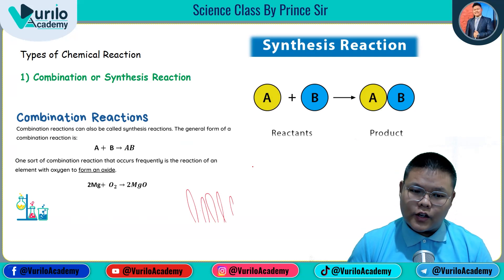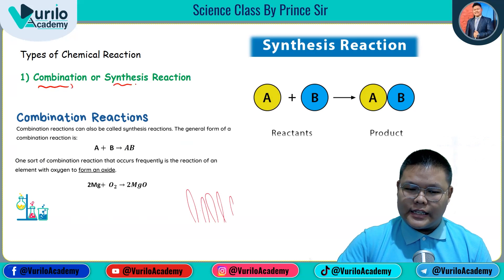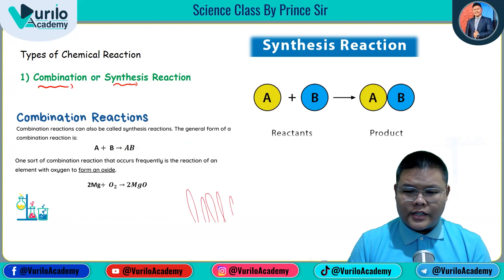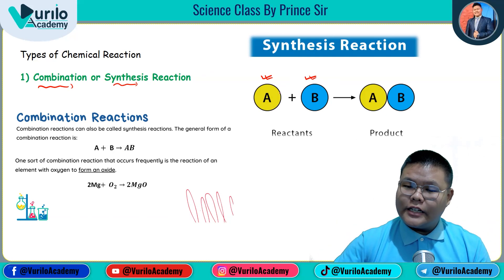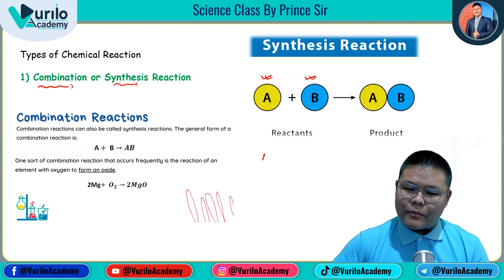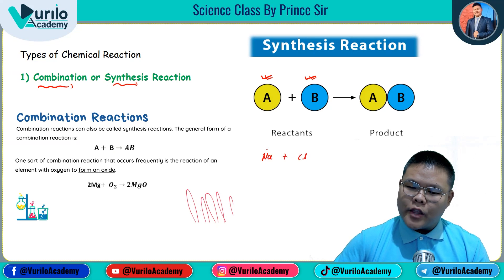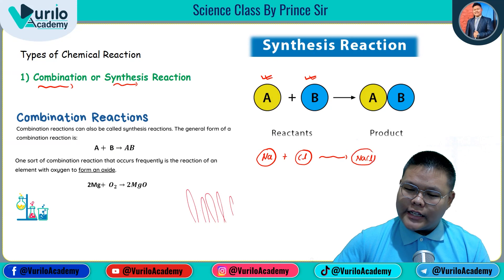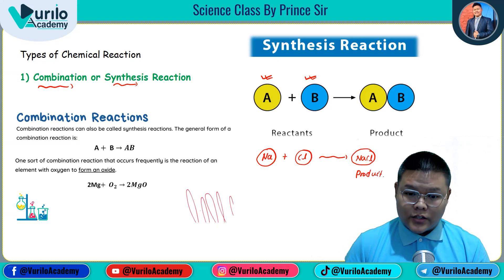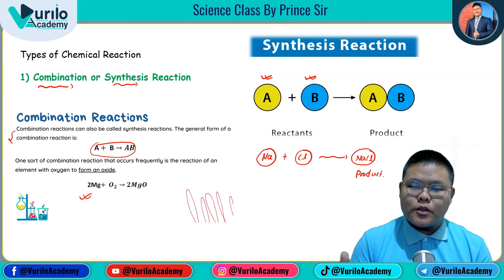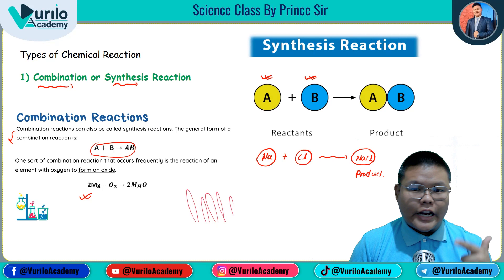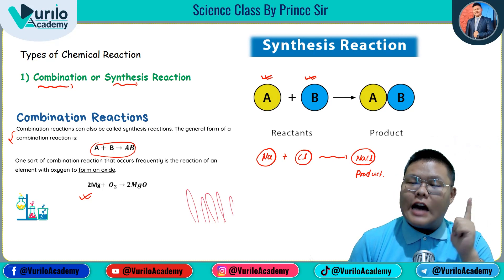First: combination and synthesis reaction. This is important. The name is combination. Suppose we have reactants A and B — then we combine the two, and the product is AB. For example, Na plus Cl gives NaCl. Simple general formula: A plus B gives AB. Another example: Mg plus O2 gives magnesium oxide MgO. Don't forget to balance the chemical equation.